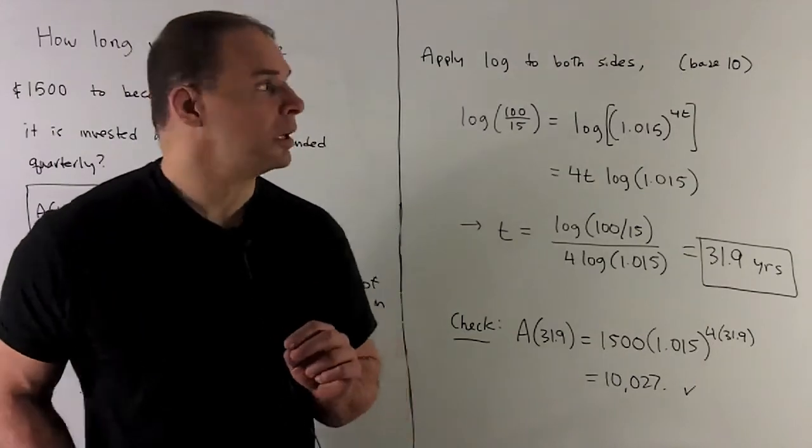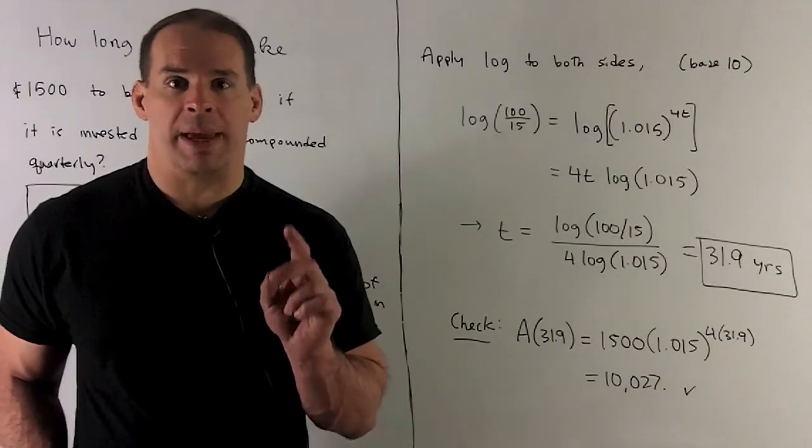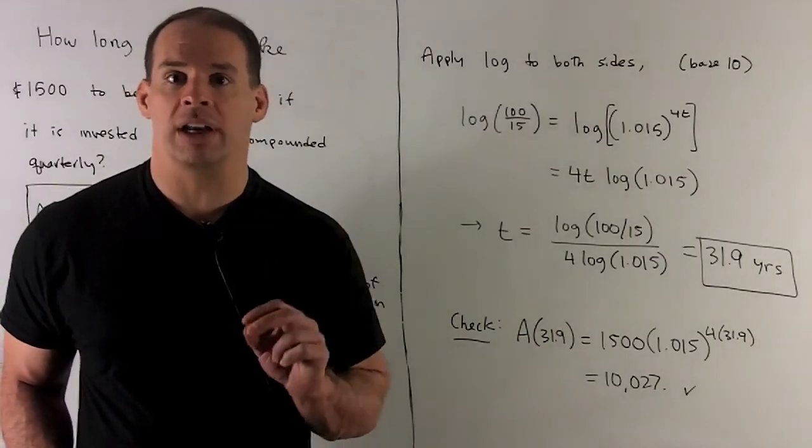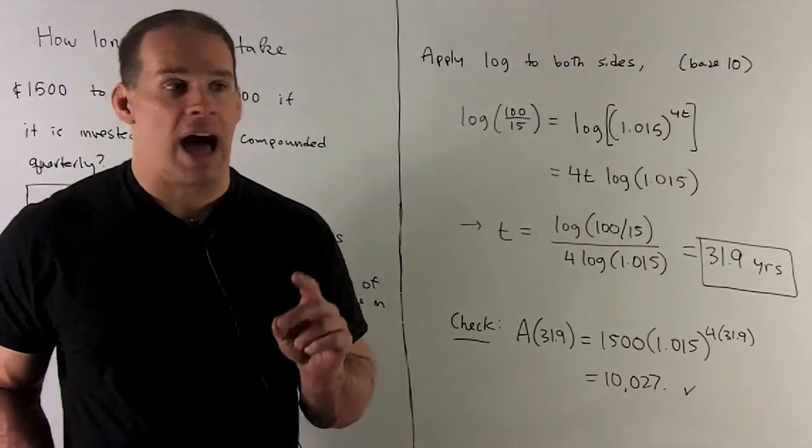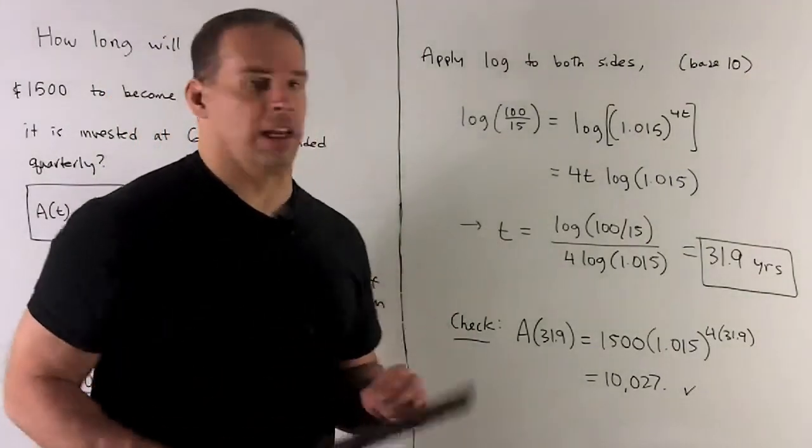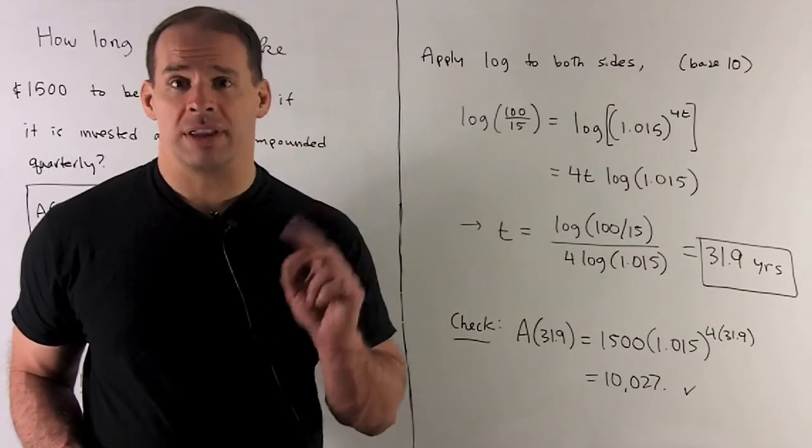So let's take a look. So when I apply log to both sides, in this case that means base 10, but it's not written on the function. So what do we have? I'm going to have log of 100 over 15 equals log 1.015 raised to the 4t.